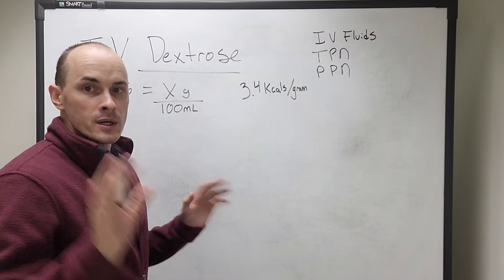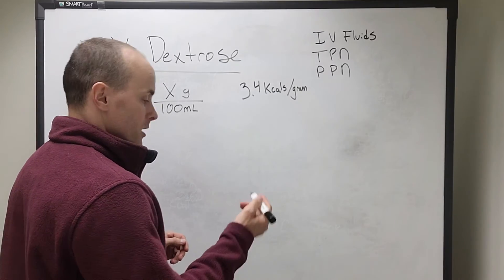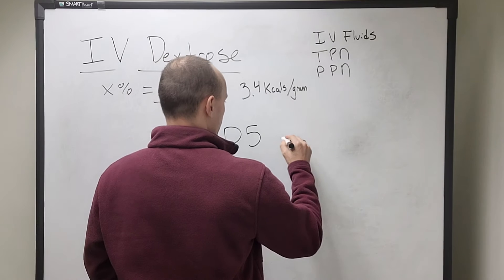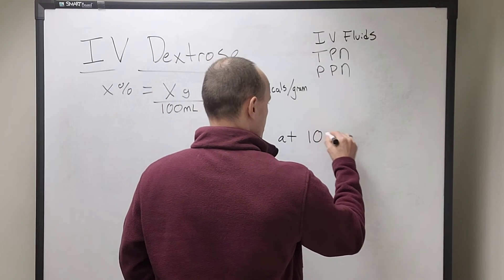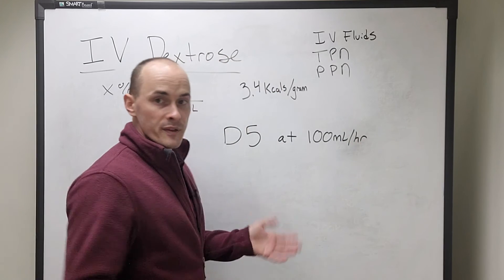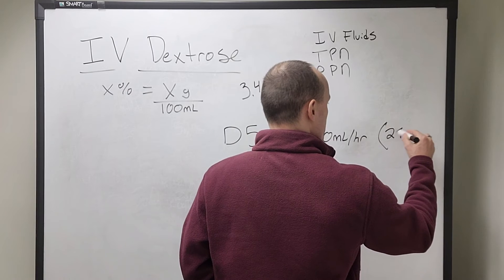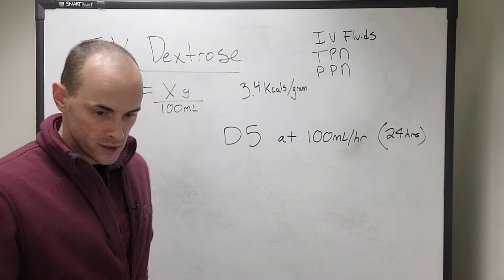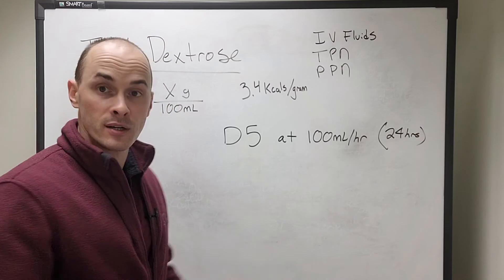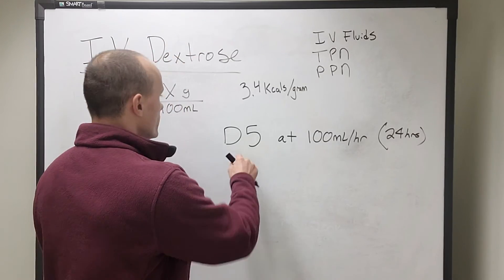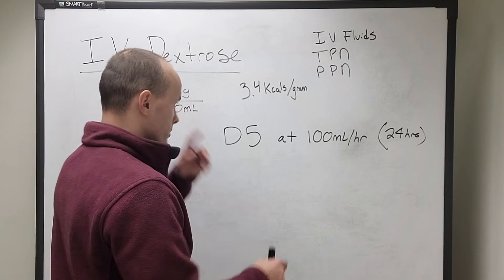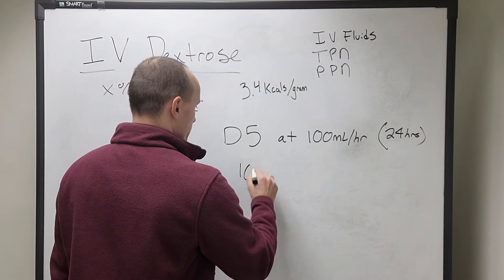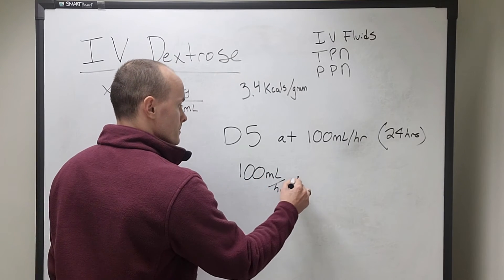All right. So we're going to have a D5 running at 100 mils per hour, and we're going to assume that this runs for 24 hours. We want to figure out how many calories this person is getting in the form of dextrose over 24 hours. So I don't have my calculator on me, so I'll just do this math the old school way. We know that they're getting 5 grams of dextrose per 100 mils.